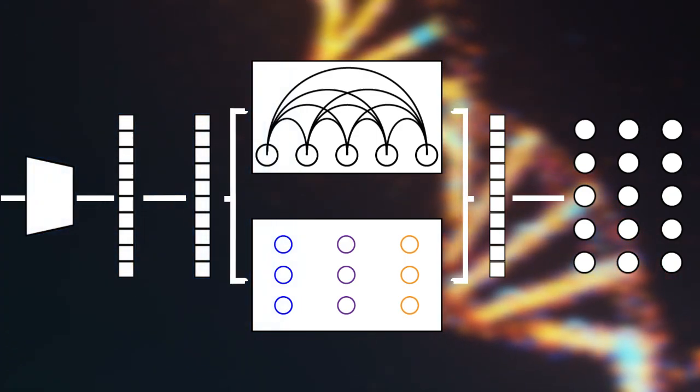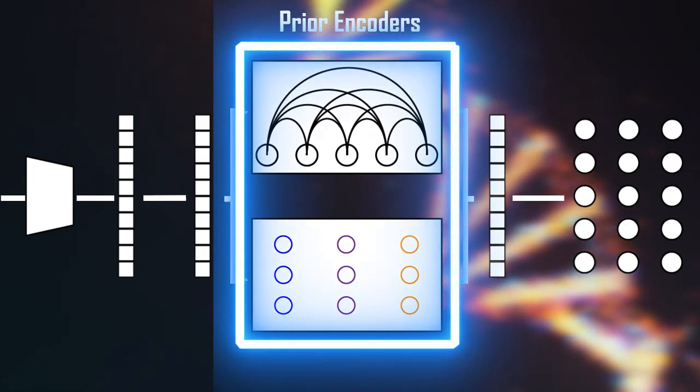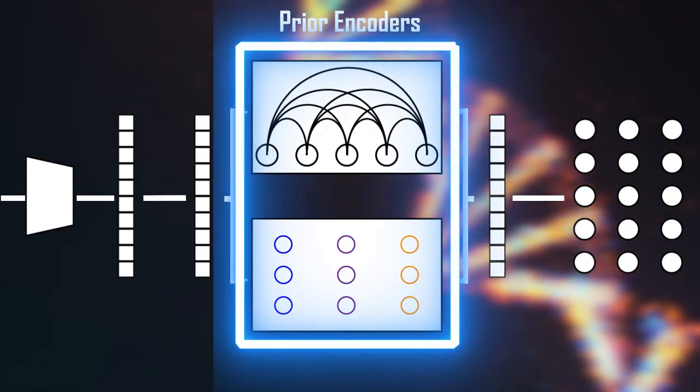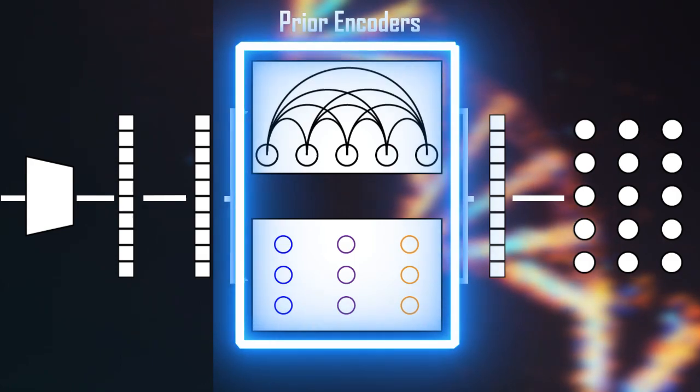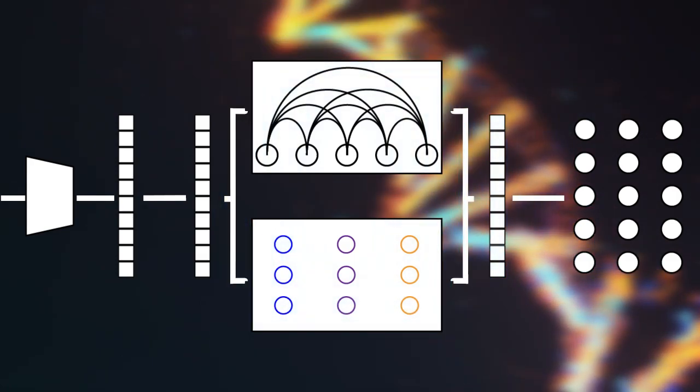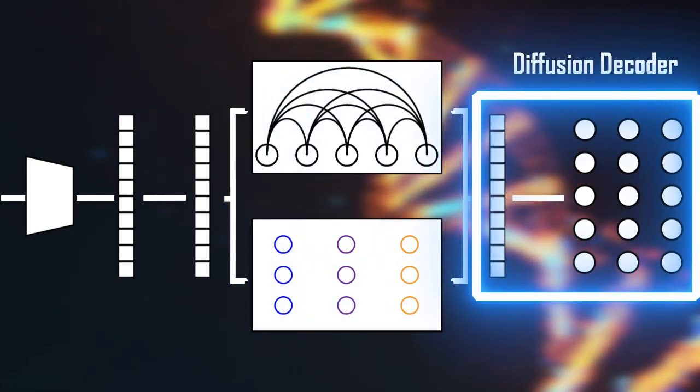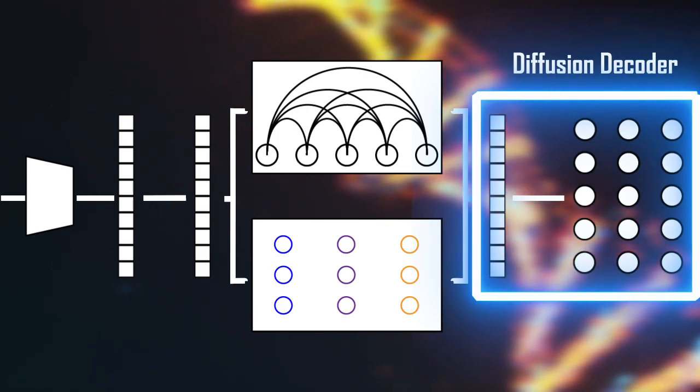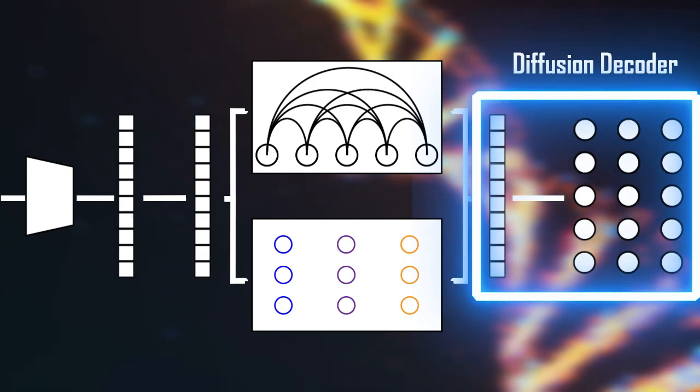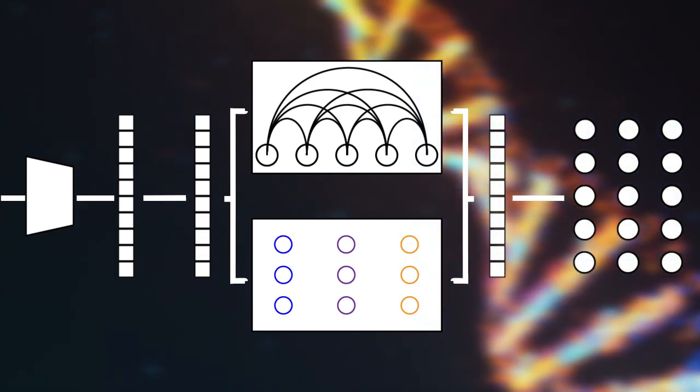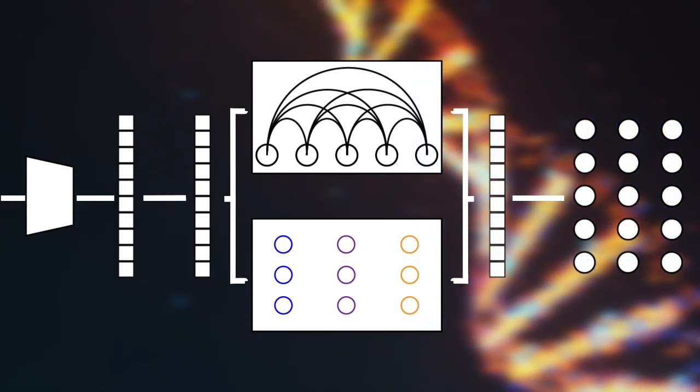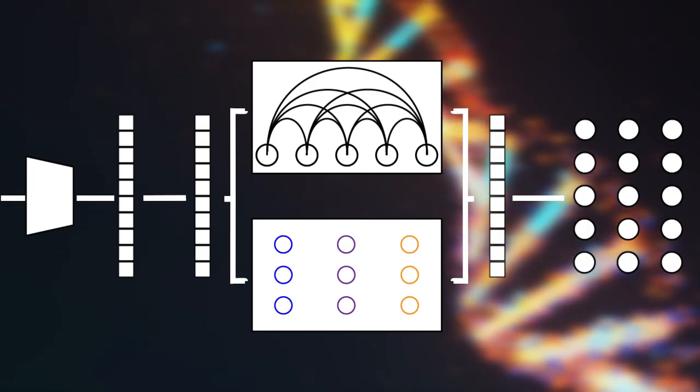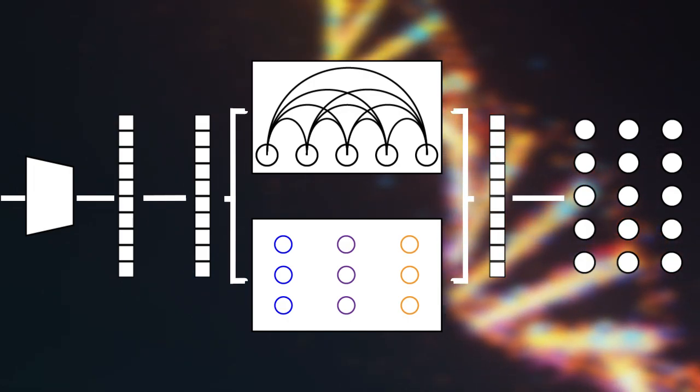Connected next to the CLIP encoder is the diffusion prior. The diffusion prior generates image embeddings conditioned on the generated text embeddings in the previous step. At the final stage is the diffusion decoder, which synthesizes the final low-resolution image conditioned on the image embeddings carried in from the previous stage. This generated low-resolution image is then pushed through a series of diffusion upsamplers to increase the final resolution of the synthesized image.